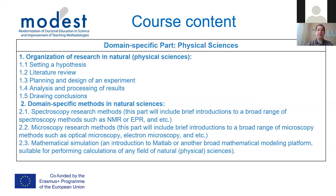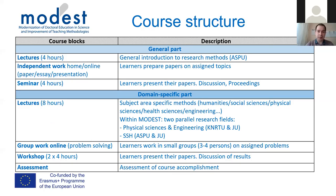The general methodology pathway — from setting a hypothesis to obtaining good research results and finalizing the project — is the same for all disciplines. For physical scientists, the focus is on experimental science. We selected two broad areas: spectroscopy methods and microscopy research methods, applicable to almost any university in physical sciences within our consortium. We also offer a mathematical modeling component, covering programs such as MATLAB or another mathematical modeling platform, important for any research in physical or even social sciences.